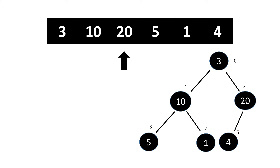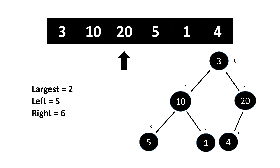After selecting the index we maintain three pointers: largest, left, and right. Here largest is at index two, left is at index five, and right is at index six. We check if the element at the left index is greater than the element at largest — four is not greater than twenty. We also have no right child, so we move on.